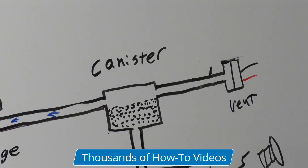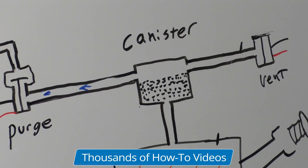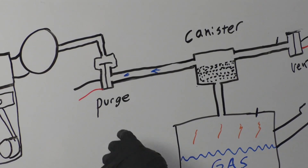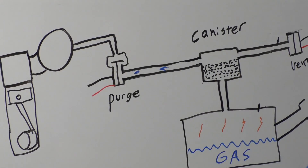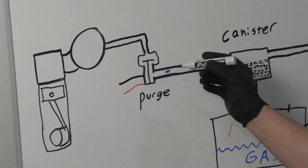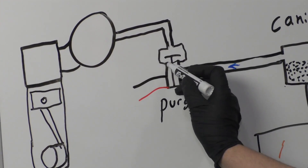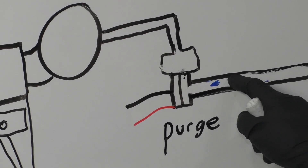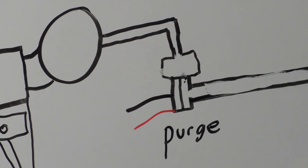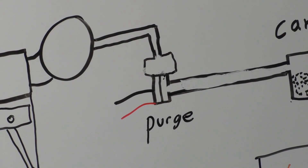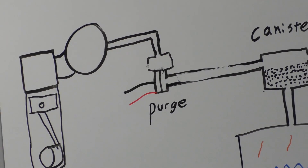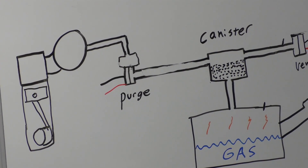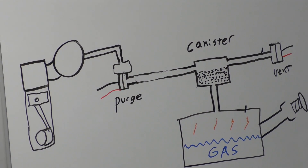The system monitors the vacuum to make sure there are no leaks. Eventually this will close, and with the vacuum in the system, the computer is going to monitor how long it can hold that vacuum. If it can't hold the vacuum, then you're going to get your check engine light.